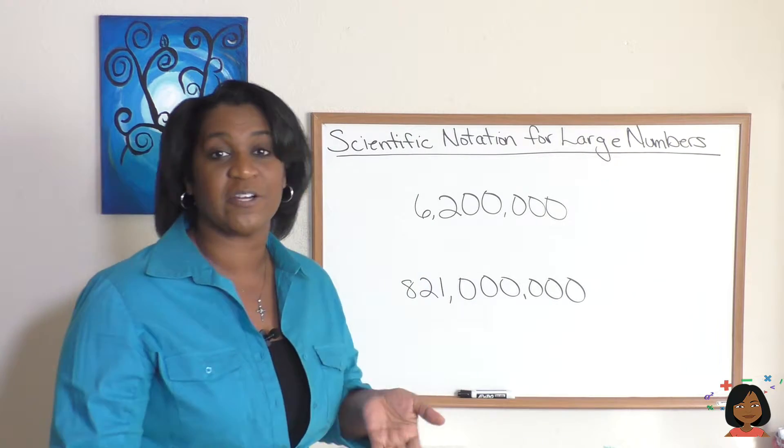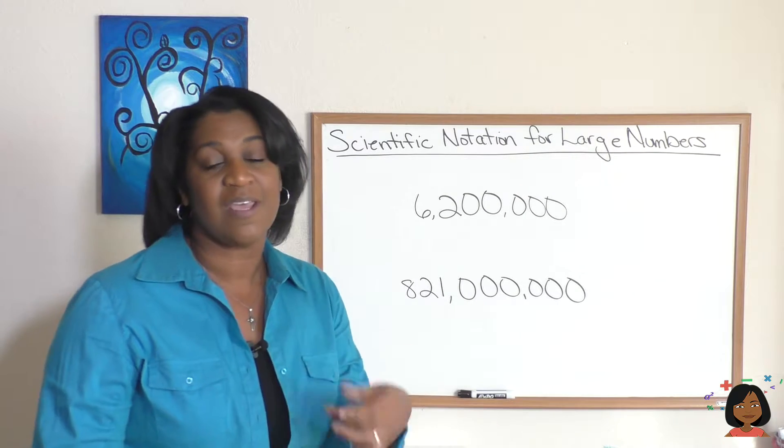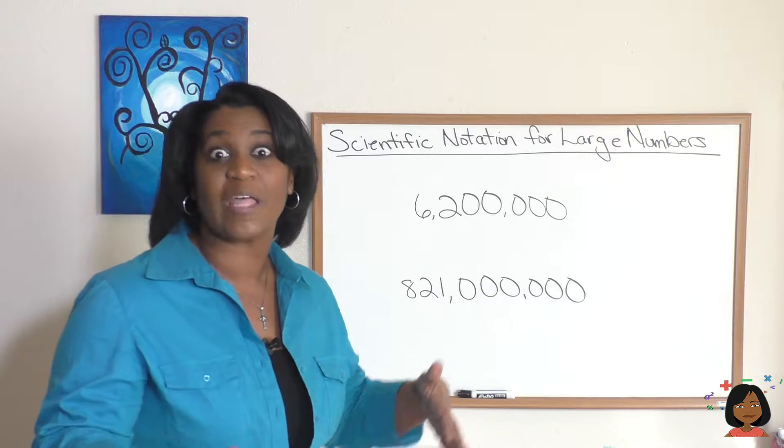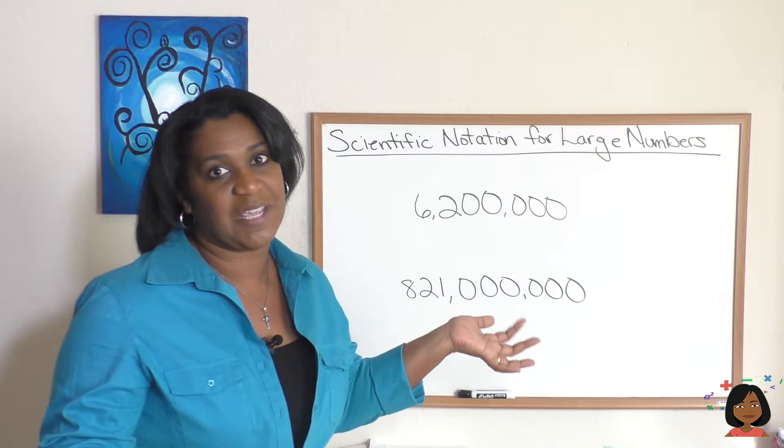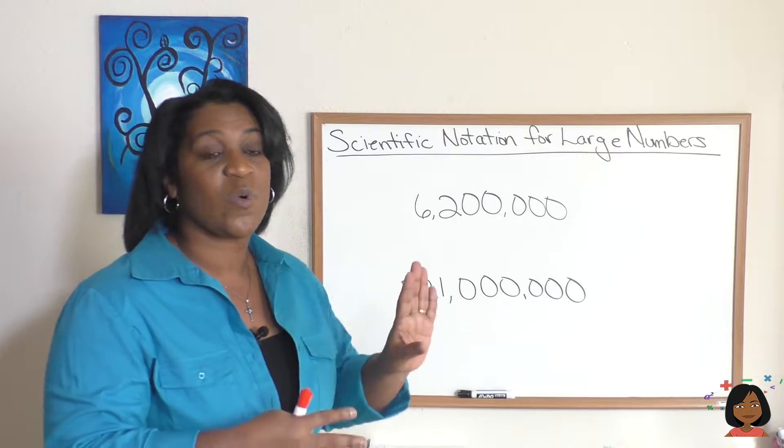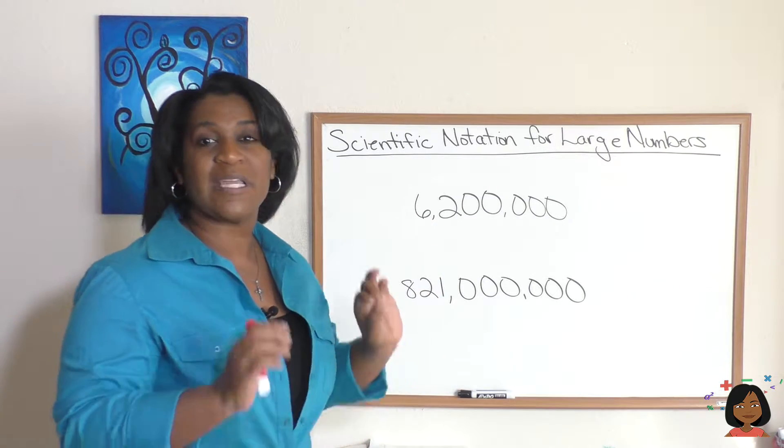So first number we have here, 6,200,000. Okay, it's not really, really hard to write that, but after a while, if you had to write it 10 times, it might take a while. So we can use scientific notation, which is we're going to turn this number into a decimal.